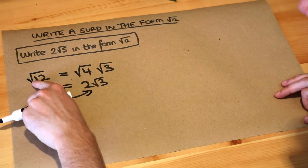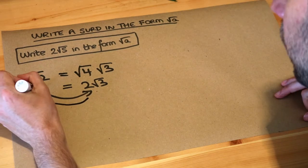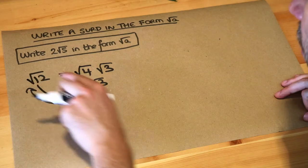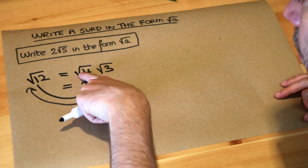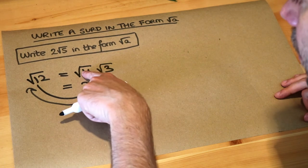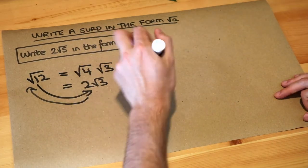So we went in this direction, we simplified root 12 to 2 root 3, but now we want to go backwards. How do you get back from 2 root 3 to root 12? Well, we can see 2 can be replaced with root 4, and once it's root 4, because we're multiplying two surds together, 4 times 3 is 12, and that's exactly what we're going to do here.